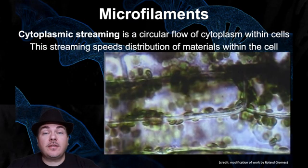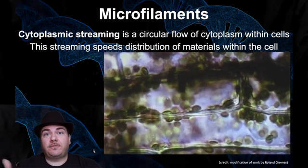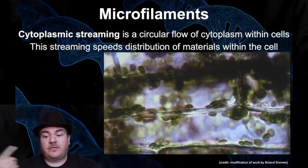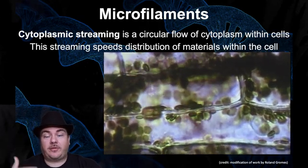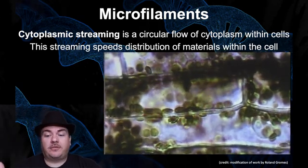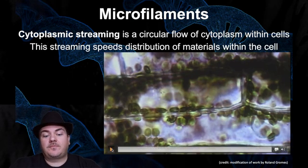Another thing actin microfilaments are used for is cytoplasmic streaming — the movement of the cytoplasm, the fluid inside a cell. In this image, the chloroplasts appear to be swimming, but they're not; the cytoplasm itself is moving, and that movement carries the chloroplasts around the cell. This cytoplasmic streaming is created by actin microfilaments.